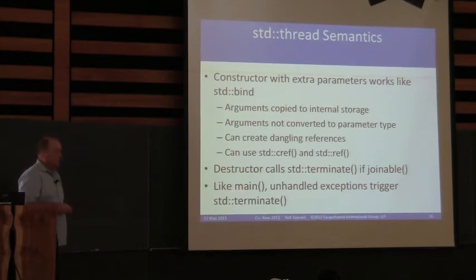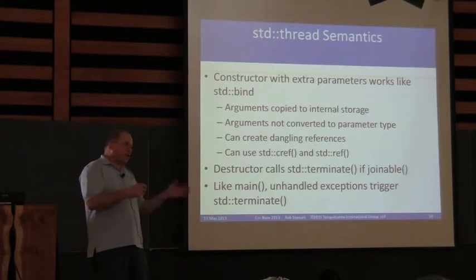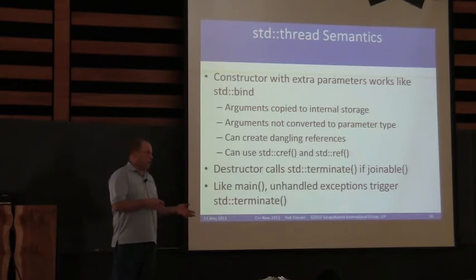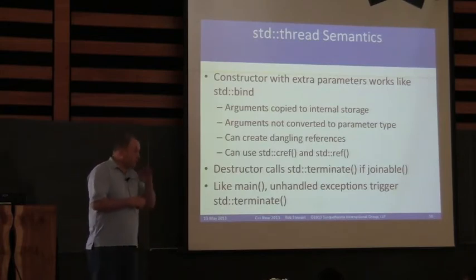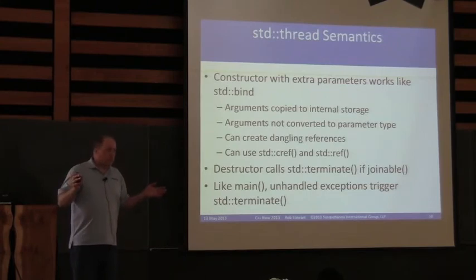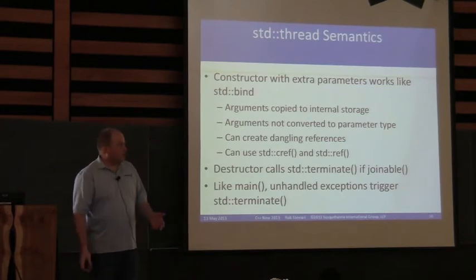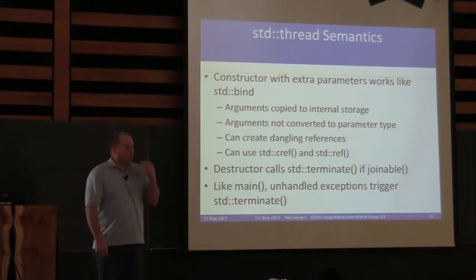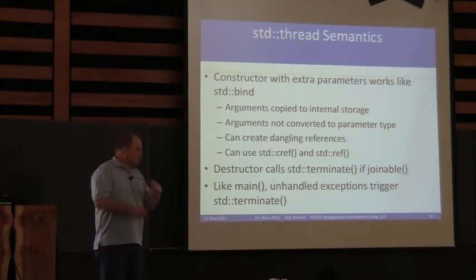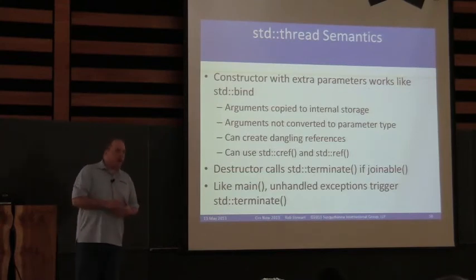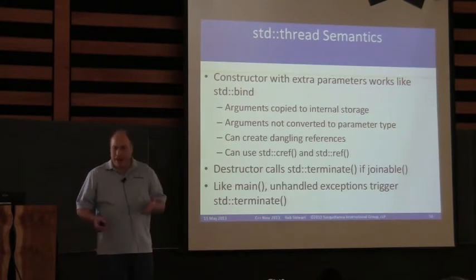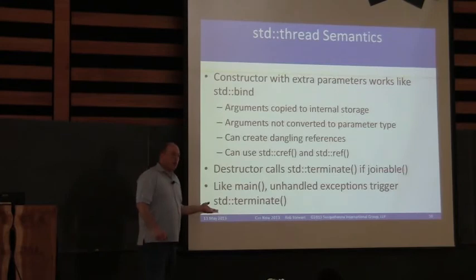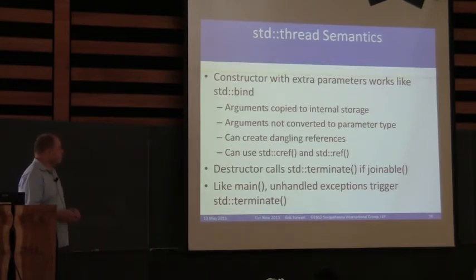The destructor behavior also catches people by surprise. Just as if an exception propagates out of main std::terminate gets called, it's the same in a thread — if an exception propagates out of the thread function, the thread will call std::terminate. We ran into this fairly recently: we had an application that under a certain circumstance just disappeared — it was a daemon process on Linux. We had absolutely no idea what was going on. Only when we ran it in the foreground and recreated the conditions did the GCC runtime tell us that an exception wasn't caught, so std::terminate was called. So you have to think of it like main: don't let exceptions propagate, deal with them one way or another. Otherwise std::terminate gets called.